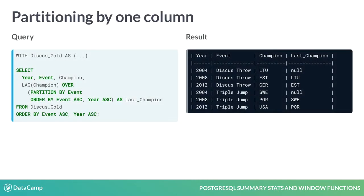Let's use PARTITION BY to fix this query's results. Adding PARTITION BY Event in the OVER clause, before ORDER, will separate the table into two partitions — one for Discus Throw and one for Triple Jump, the two unique values in the Event column.